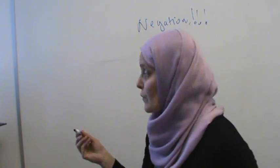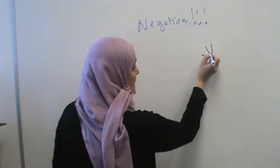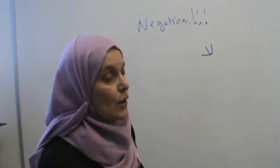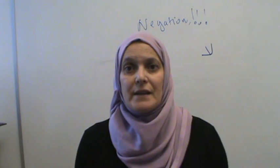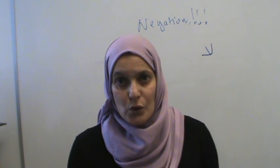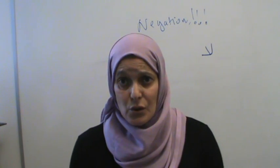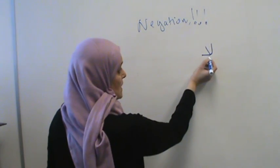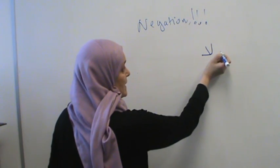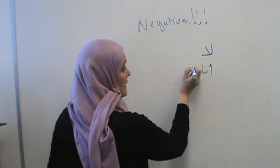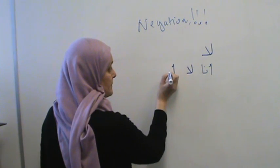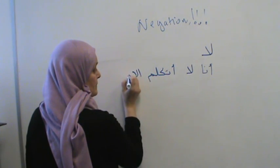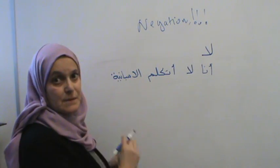This word is 'la.' We are negating in the present tense — like 'I don't live in Denver,' 'I don't live in Colorado,' 'I don't live in Cairo.' Note that 'don't' does not affect your conjugation at all. You just need to put 'la' in front of the verb. For example: 'Ana la atacallam al-Ispania' — I don't speak Spanish.